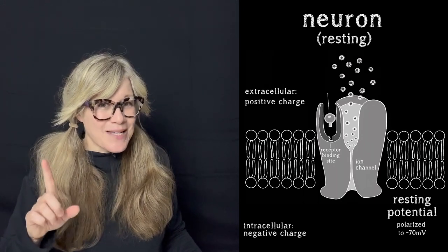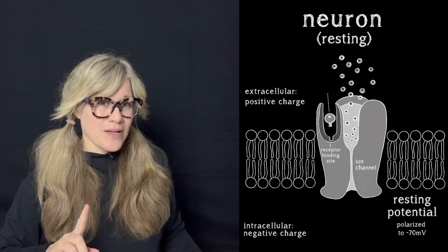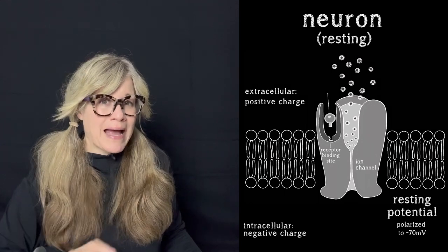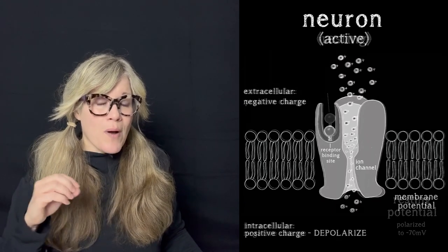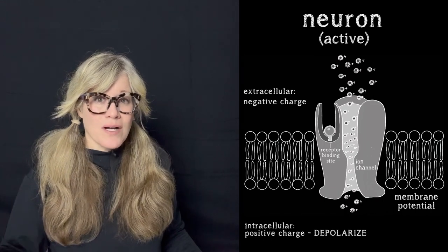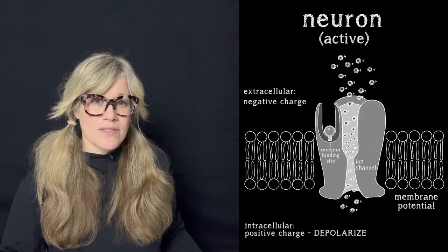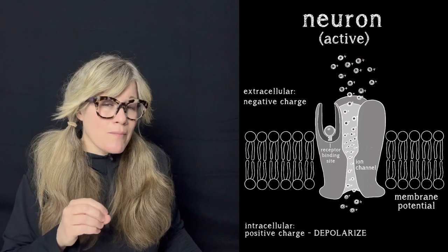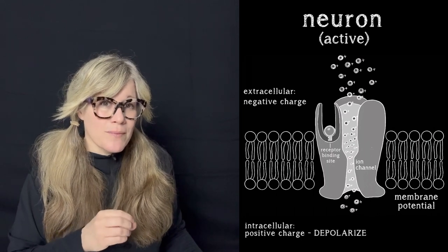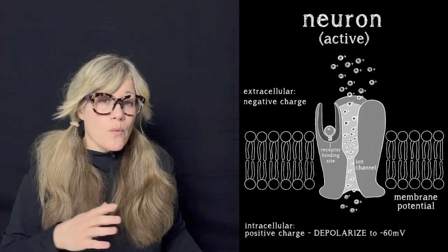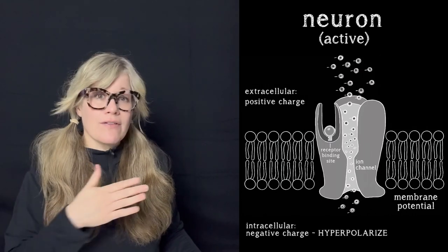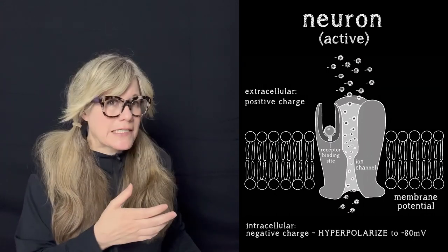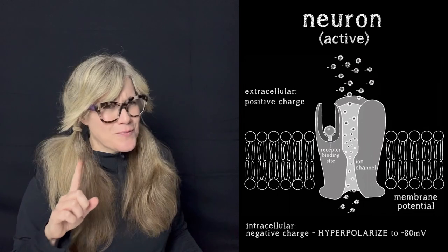If you remember, a set point is part of the homeostatic feedback loop. When it shifts too far from its range, the body initiates activity that will bring it back to its set point range. So when more positive ions enter the cell, it becomes less polarized than minus 70 millivolts — the charge moves closer to zero millivolts. For instance, a signal of small magnitude may shift the charge up to minus 60 millivolts. When it's hyperpolarized, the charge moves even farther from zero millivolts than minus 70 millivolts, so maybe it'll reach minus 80 millivolts.